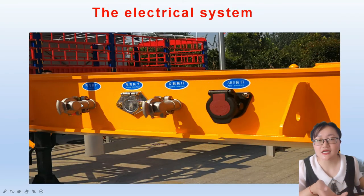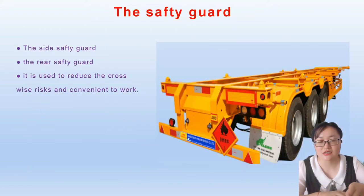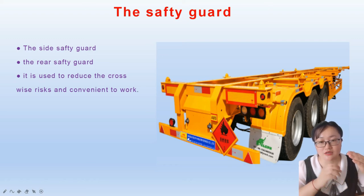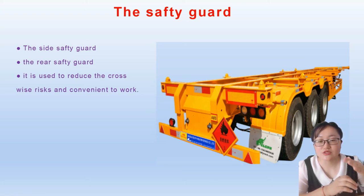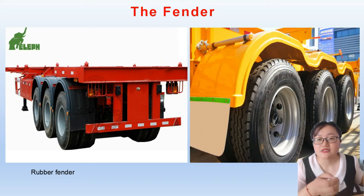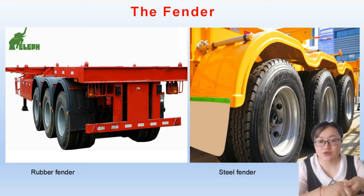These are the spare parts of our skeleton semi-trailer. This is our safety guard, which includes the side and the rear safety guard. The side guard is used to reduce crosswise collision risks and reduce damage when driving on rough roads. Both are convenient for your work. And these are the fenders. The fender materials include rubber, steel, and aluminum.